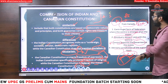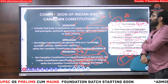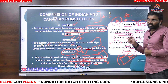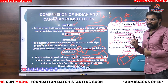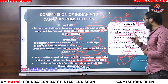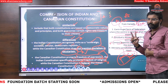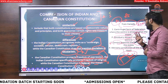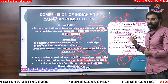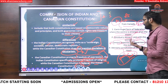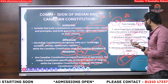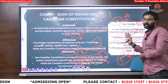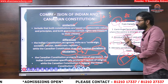So, what are the provisions taken from Canada? First, the center is stronger than the states. Second, residuary powers rest with the center. Third, the center appoints the governor. Fourth, advisory jurisdiction of the Supreme Court. These are very very important.